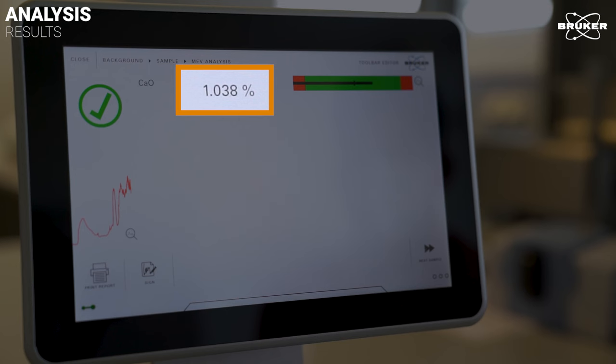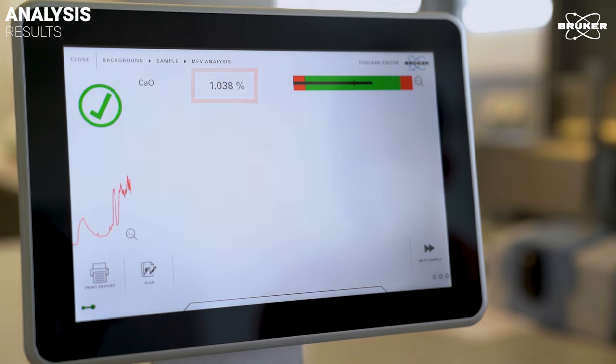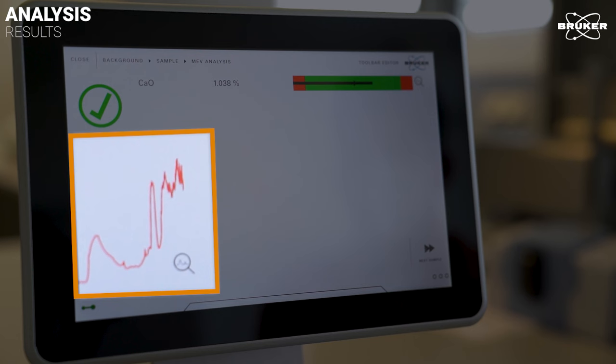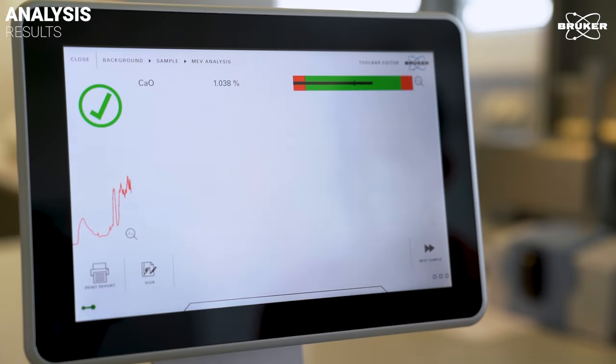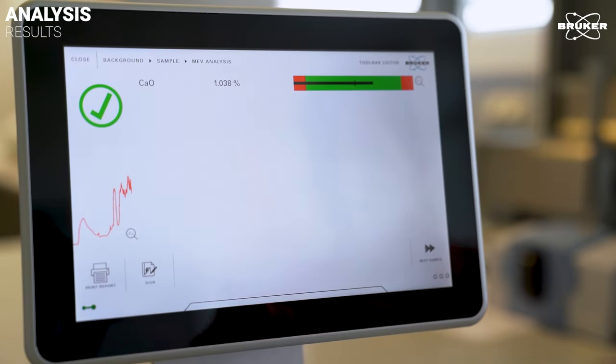So, the sample is just within the specified acceptance limits, which is shown in the graph on the top right. You can view the IR spectrum in more detail by clicking on the magnifying glass on the left or you can save the result as a PDF file under the Print Report button.